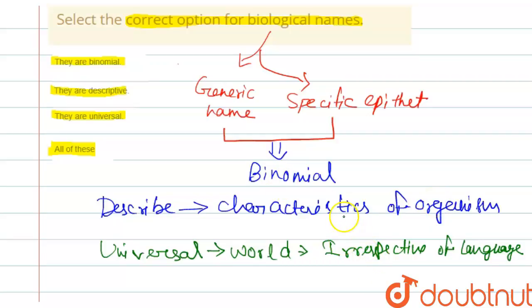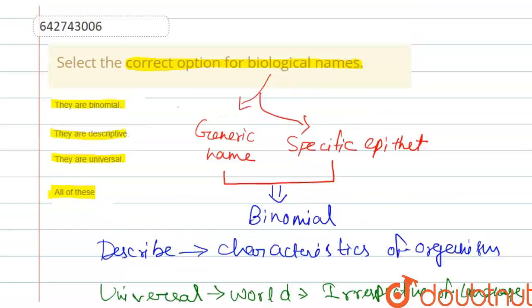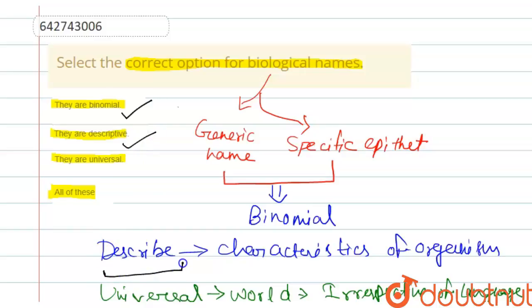Since all three characteristics apply — binomial, descriptive, and universal — the correct option is the fourth one: all of these.